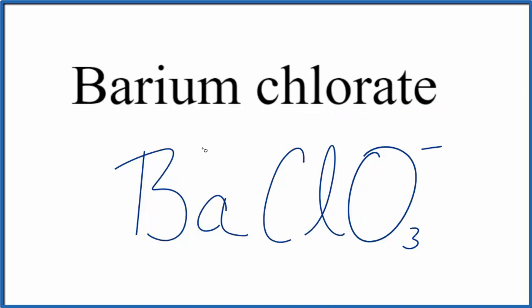Barium is in group 2 on the periodic table, so it'll be 2+. It'll form 2+ ions. We said the chlorate ion, the whole thing here, is 1-.